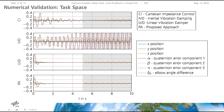For the linear vibration damper and the proposed approach, the disturbance is also better suppressed. For both methods, the error in task space is mainly in the C direction. This decoupling feature is not observable for the other two approaches.